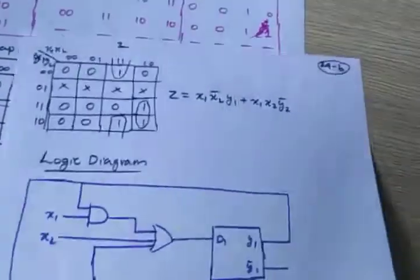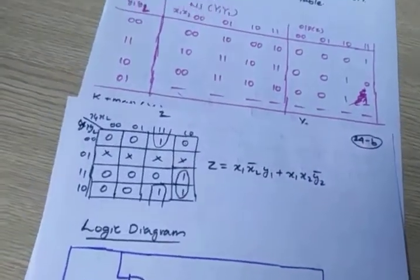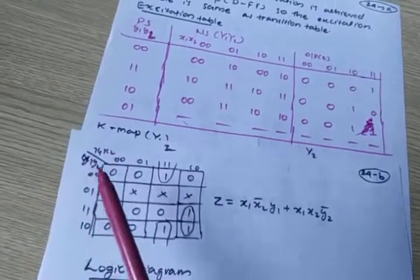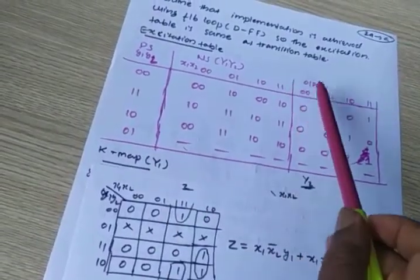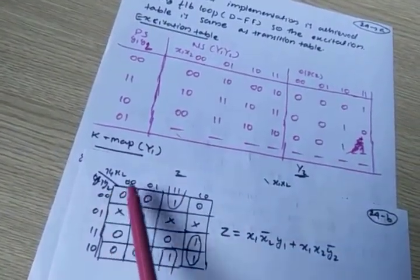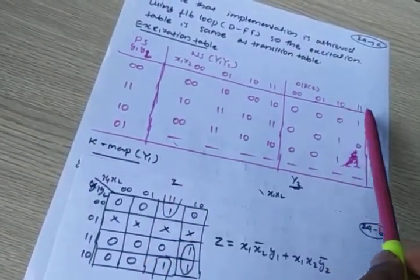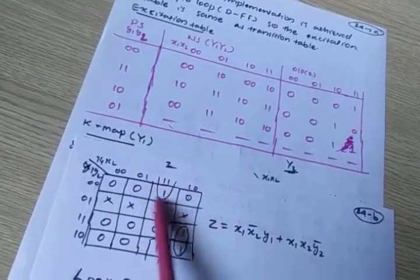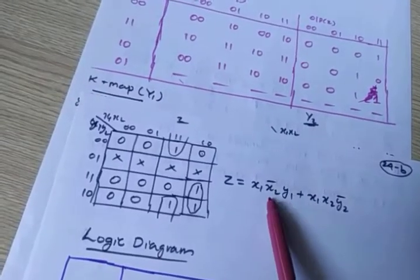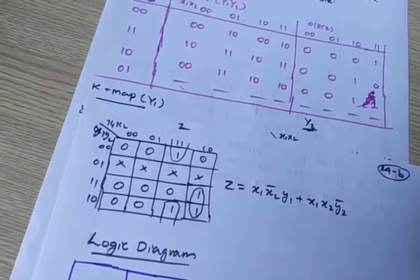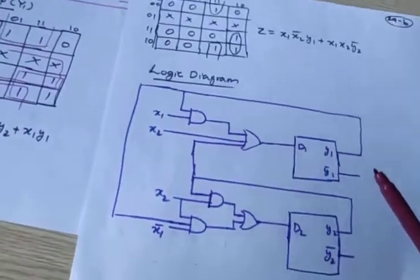Similarly for Z, you write the output K-map. Z is the output only; it also uses four variables. Filling the K-map from the output column — most entries are 0, with don't-cares for undefined states — after reduction you get: Z = y1 + x1·x2·y2̄. So you now have three equations: Y1, Y2, and Z.